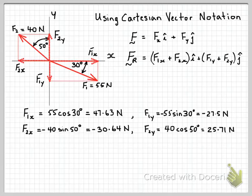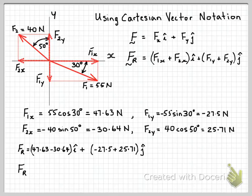And if we just bring back the values that we calculated previously, then we have FR equals 47.63 minus 30.64 times the unit vector i plus minus 27.5 plus 25.71 times the unit vector j. This gives us our resultant vector FR equals 17.0 times the unit vector i minus 1.79 times the unit vector j.